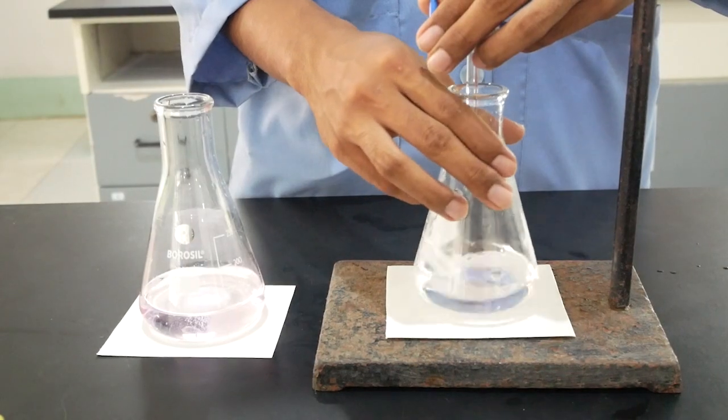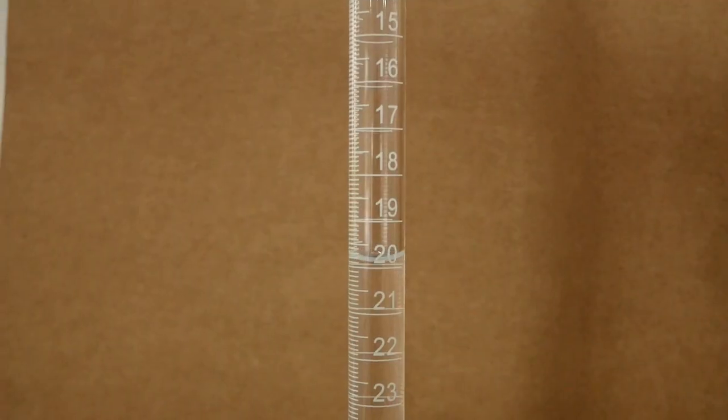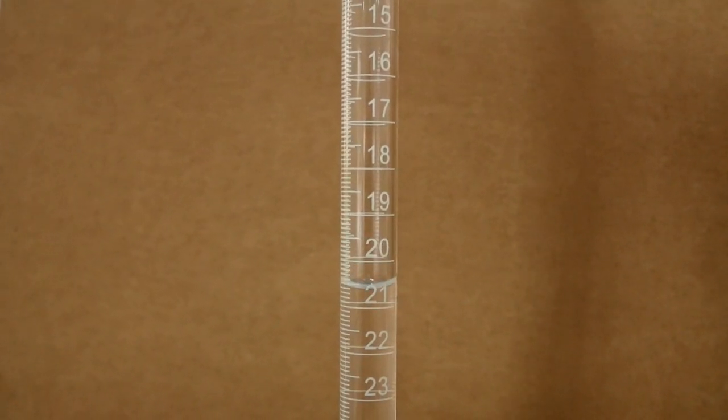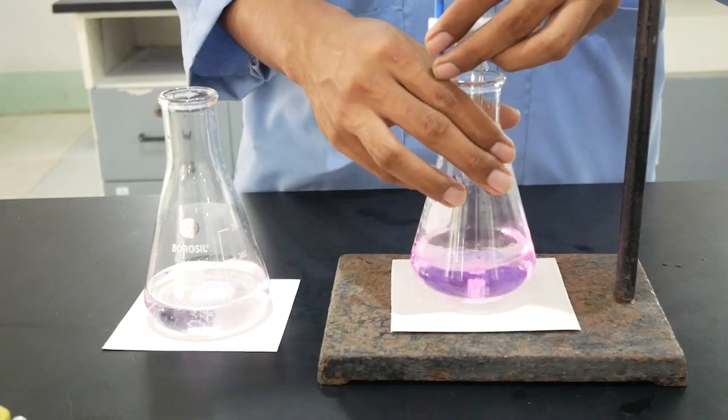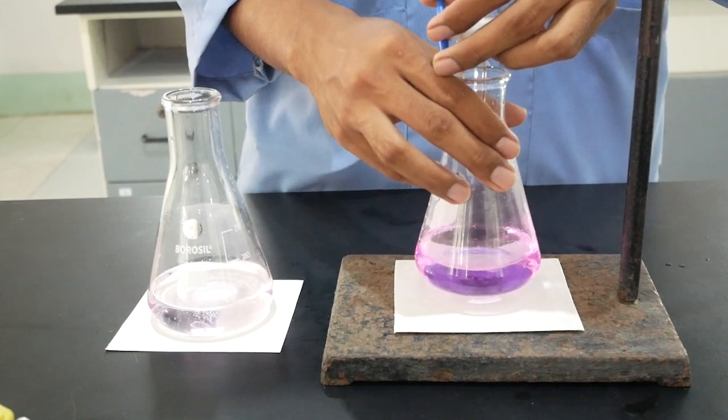Continued addition of titrant after the endpoint has been reached will result in a darker pink color in the analyte which must be avoided, as this color indicates that the pH of the solution is already above the equivalence point for the reaction.